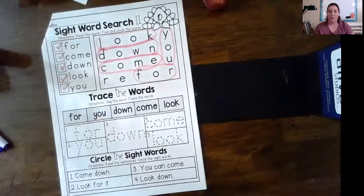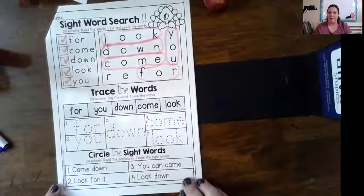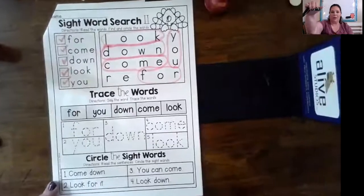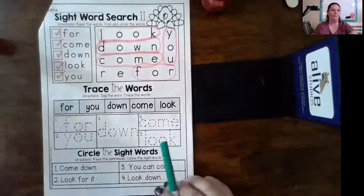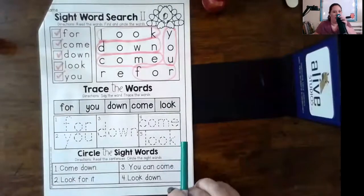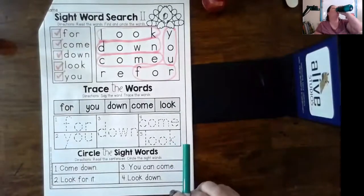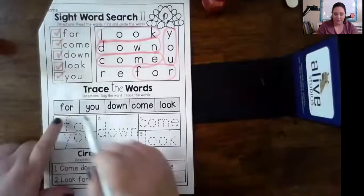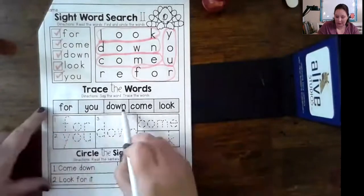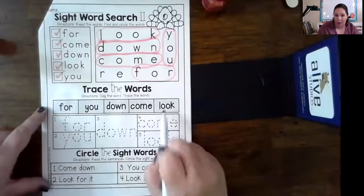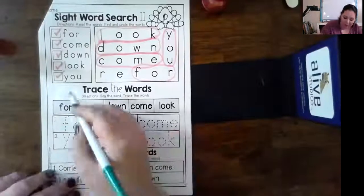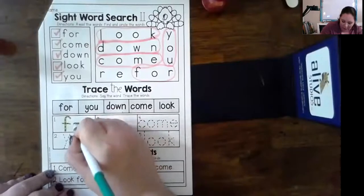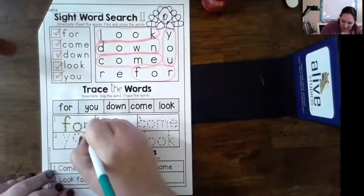Now we're going to trace the words, same words from that word bank. For you, down, come, look. So I'm going to use my marker and I'm going to trace. Pretty green. You guys can't really see it though, can you? Maybe if I zoom in a little. There.